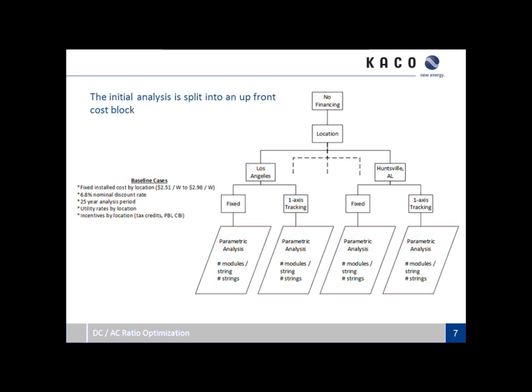To look at the initial analysis and simplify the interaction of all these variables, I blocked it into two cases. The first is a no-financing case, split into different locations, and within those locations, fixed and single-axis tracker racking types. I used SAM's parametric analysis tool to model a changing DC to AC ratio based on number of modules per string and number of strings. The baseline price per watt varied from about $2.50 to $3 a watt based on labor, land costs, and racking type. I used a discount rate of 6.8%, an analysis period of 25 years, and utility rates and incentives varied by location.